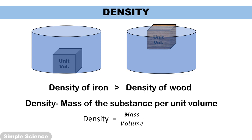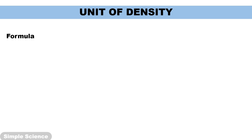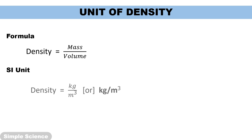So the density formula is mass upon volume. The SI unit of mass is kg and the SI unit of volume is meter cube, so the SI unit of density is kg per meter cube. The CGS unit of mass is gram and the volume is centimeter cube, so the CGS unit of density is gram per centimeter cube.